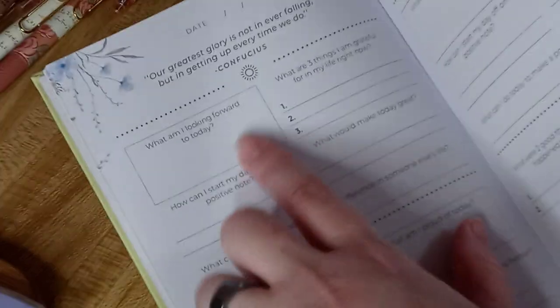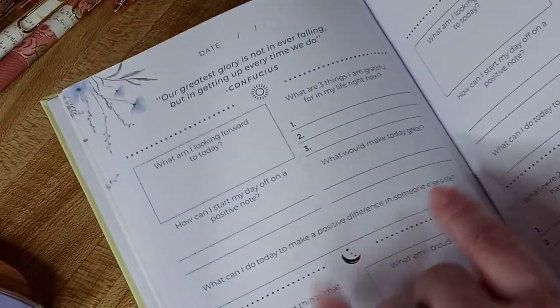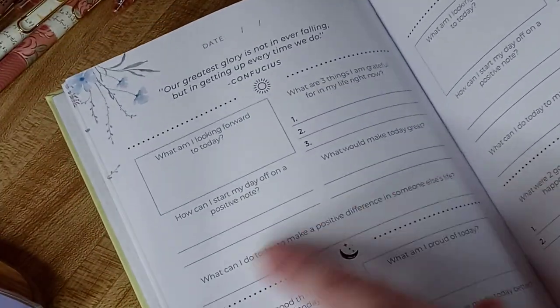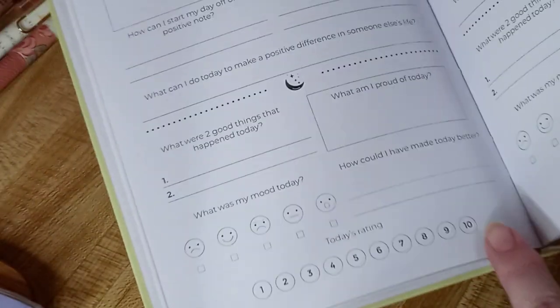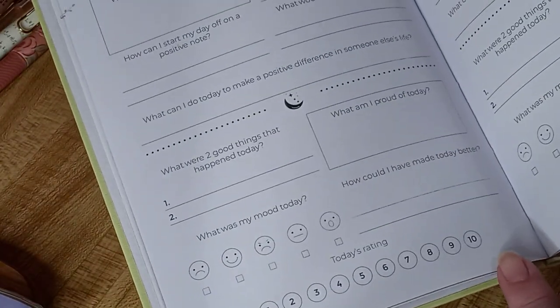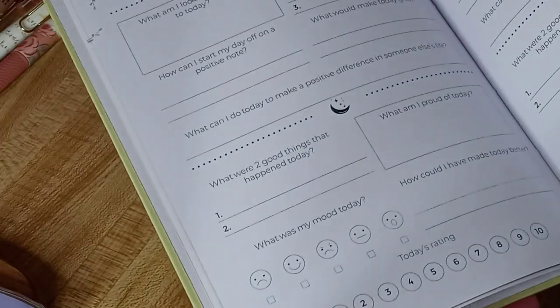So there's sections - you can put the date, whatever. But there's like a morning section to fill out before your day starts and one at the bottom for your day in the afternoon or evening, whenever you end your day.